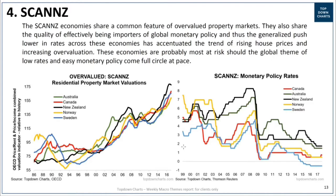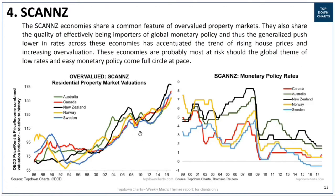That brings us to the chart on the left. This is a combination of two house price valuation indicators. The neutral point is 100 — just about at the 95 line you can see as we pass the cursor across. Below that line is an undervalued market; above it is overvalued. The two ratios are price-to-rent and price-to-income, sourced from the OECD and normalized across time relative to history.